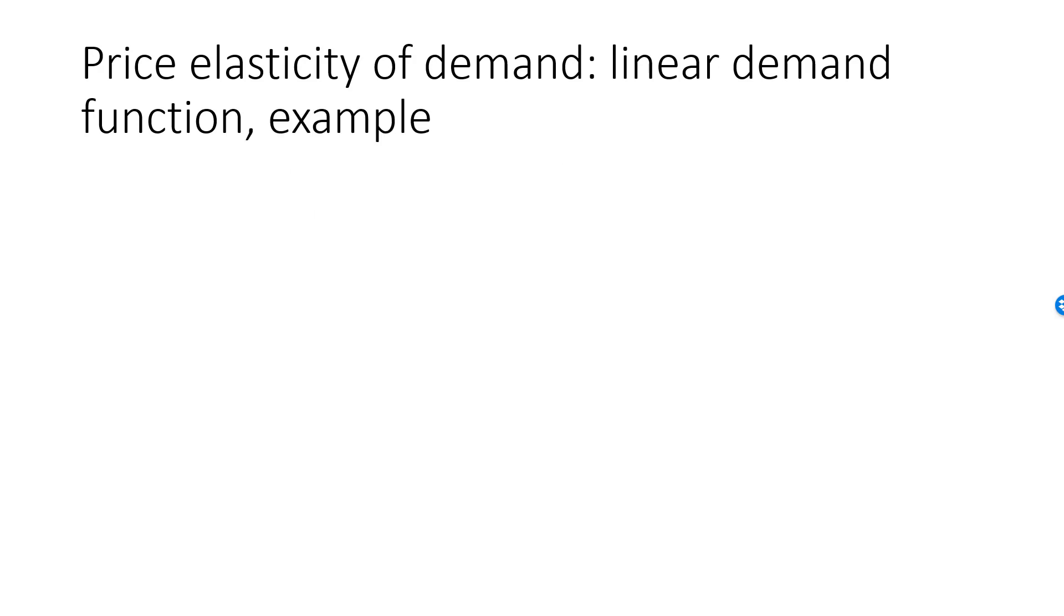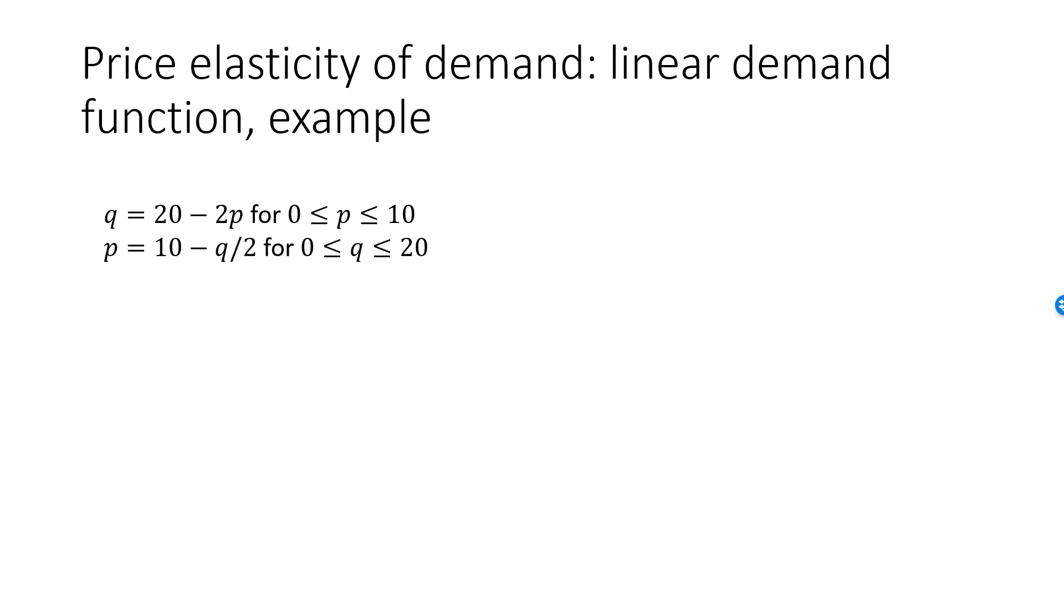We can have a look at a specific example of a linear demand function, which may be a little bit easier to understand. Say that A is equal to 20 and B is equal to 2, and our demand function is Q equal to 20 minus 2P, where P can be between 0 and 10. If we solve for P, we get the inverse demand function, P equal to 10 minus Q over 2, and this is valid for Q between 0 and 20.